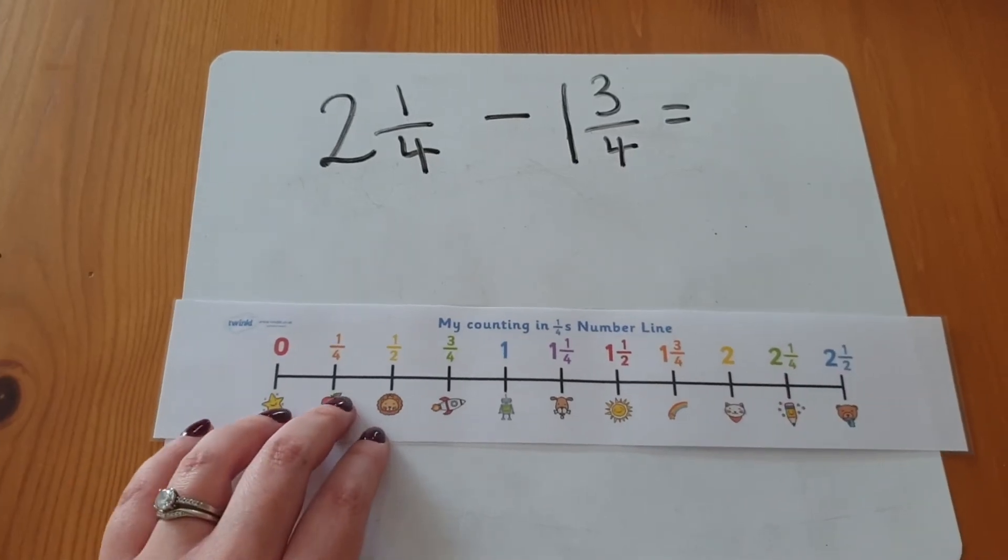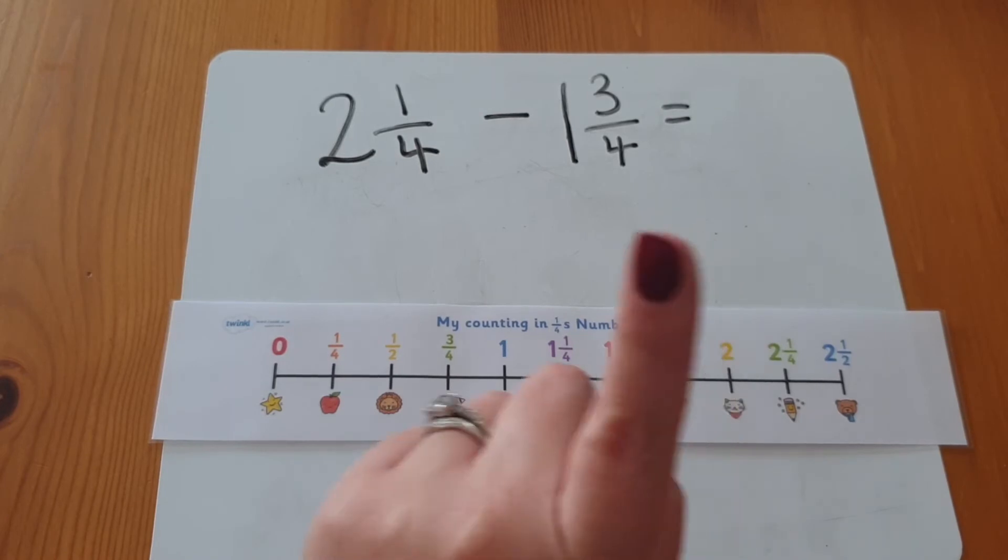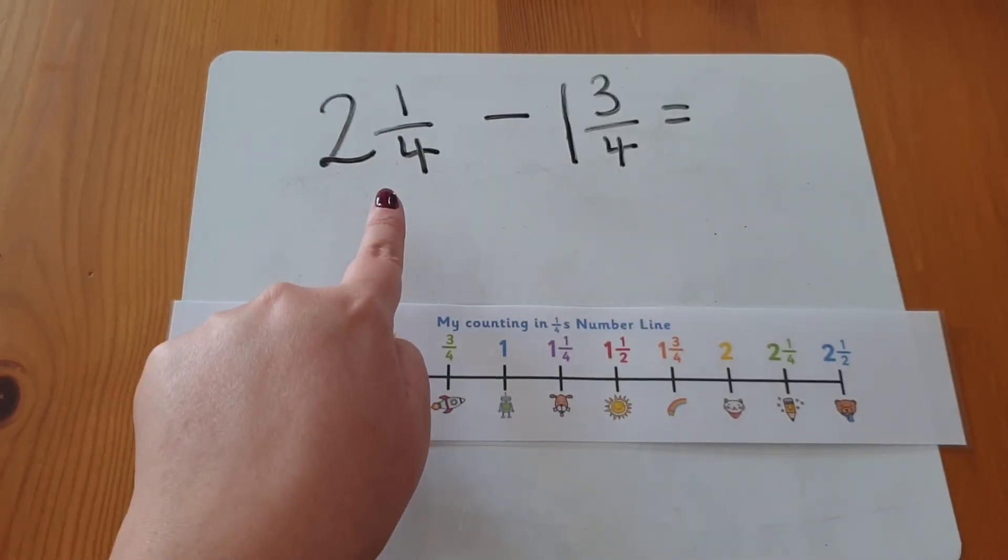And again, we could use for subtraction. Two and a quarter minus one and three quarters equals. OK, let's find two and one quarter first.